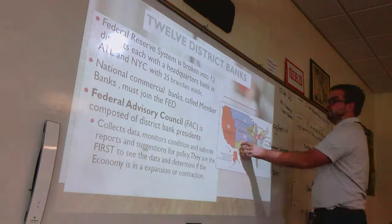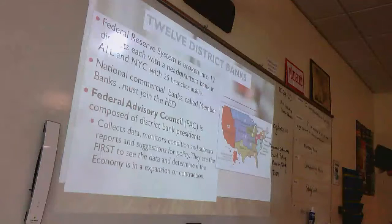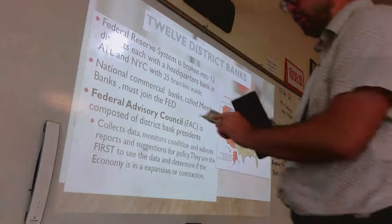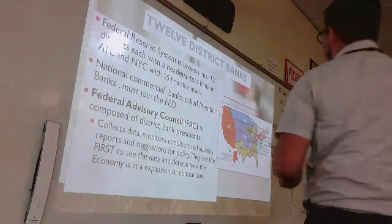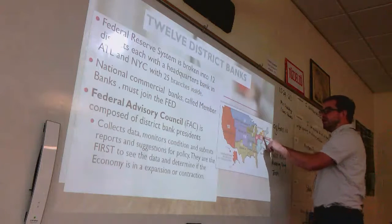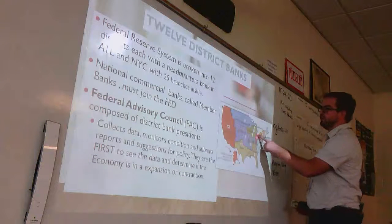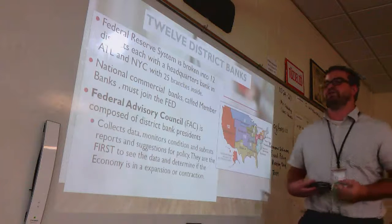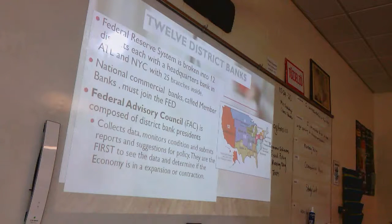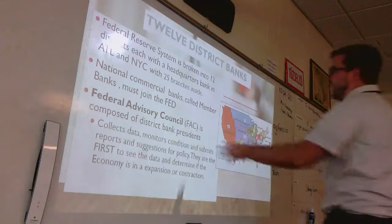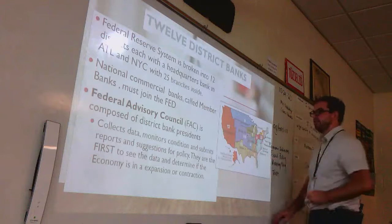Here's a cool thing: if you look at a dollar bill, in the corner you'll see a number. My dollar bill right here has a two on it — that corresponds to which district printed it. A two means it was printed in New York; a four would mean it was printed in Cleveland. The mint produces the money, but it's controlled by the Federal Reserve. The Federal Advisory Council consists of these 12 district bank presidents who all report back to the Board of Governors.